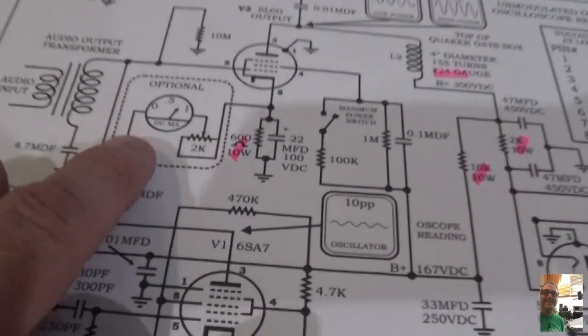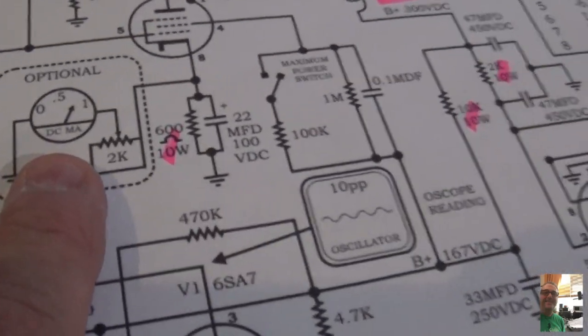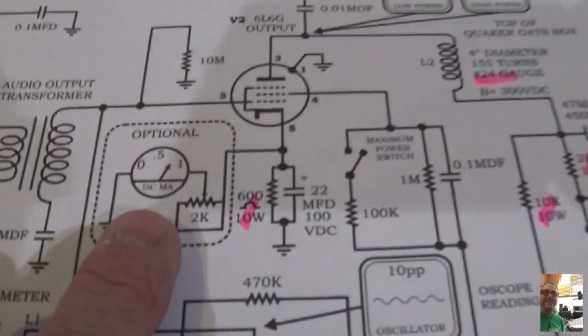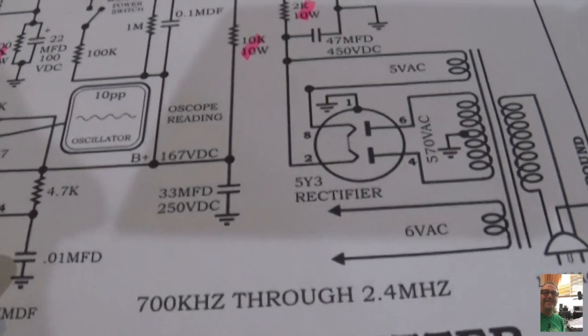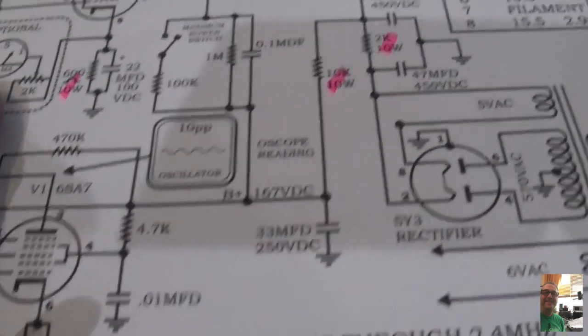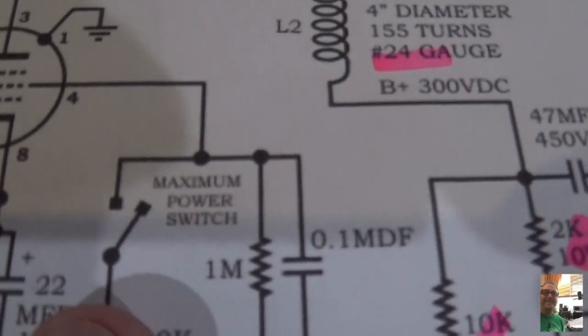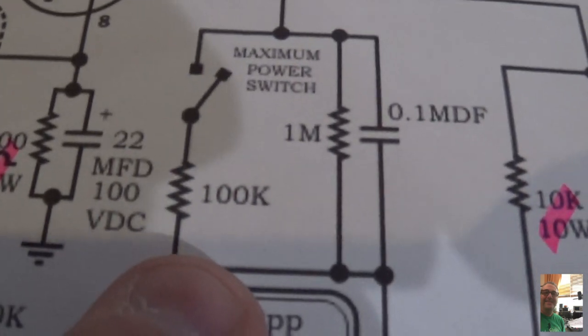Then there's an optional meter, which I'm going to do. That's because you have a high power and a low power switch on this thing, right here. Maximum power switch.